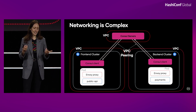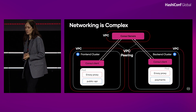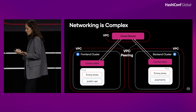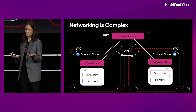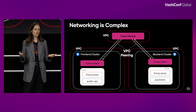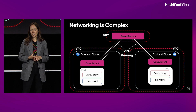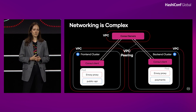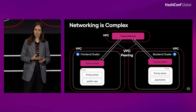VPC peering is not such a great solution because in this case we only have two clusters, so we can manage it, but if you have more clusters this could get hard to manage. And at scale, if you have a lot of clusters, you may run out of IP space and won't be able to do VPC peering for each of them.